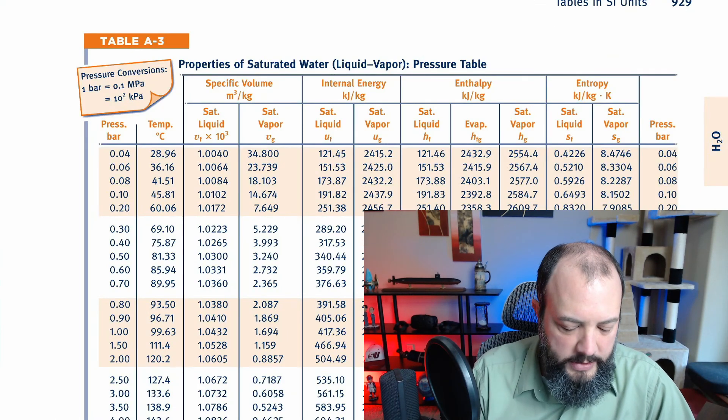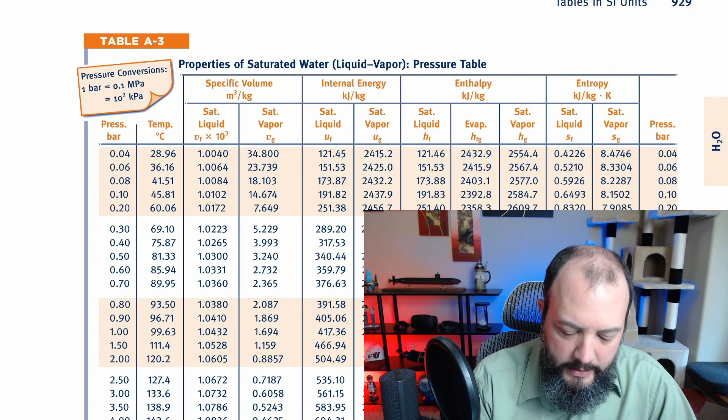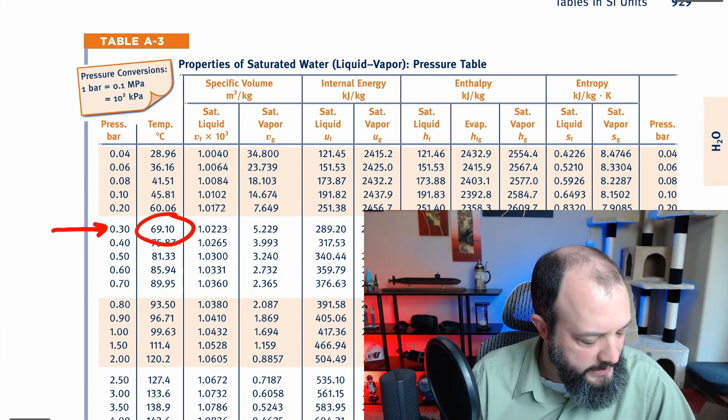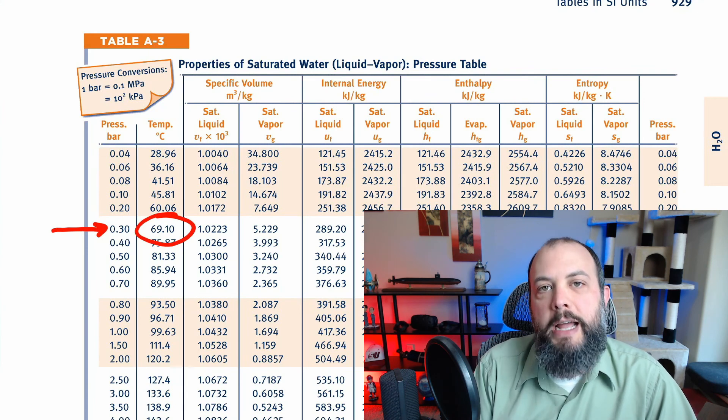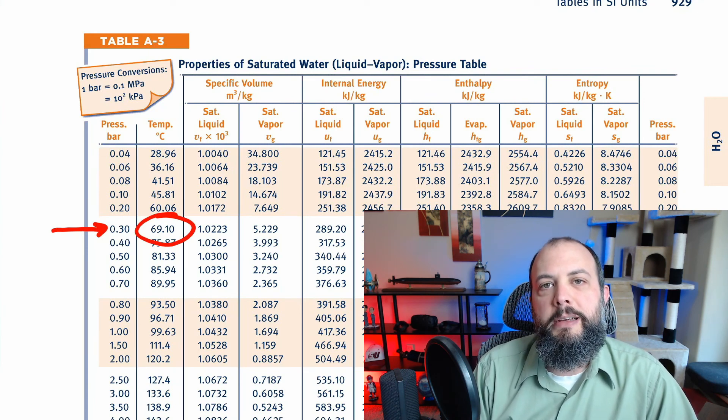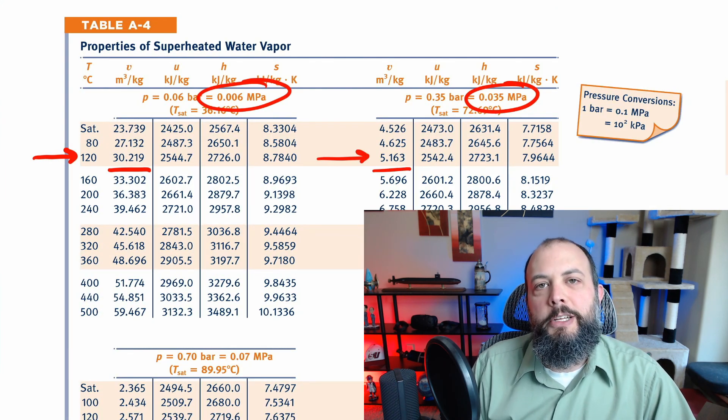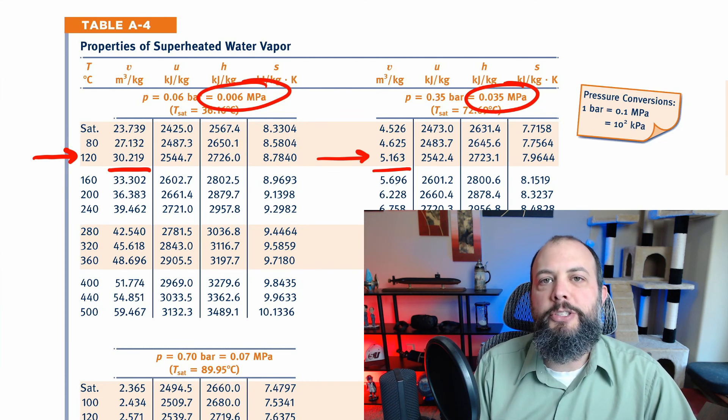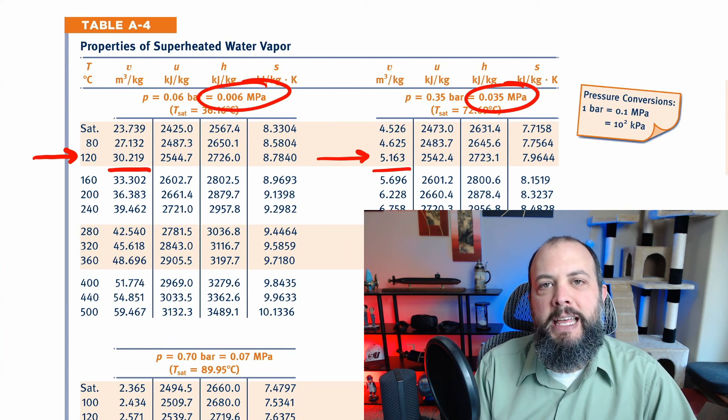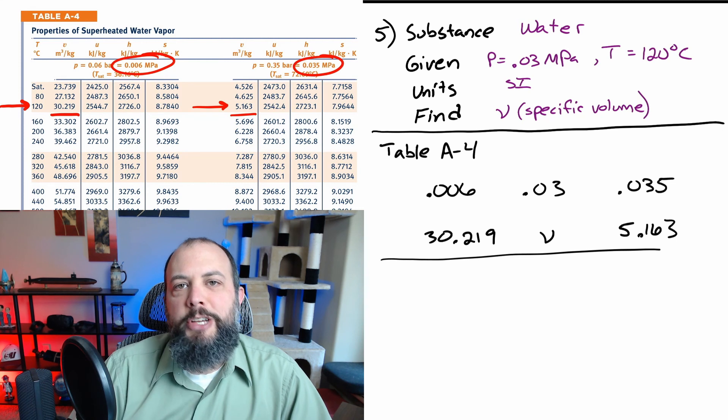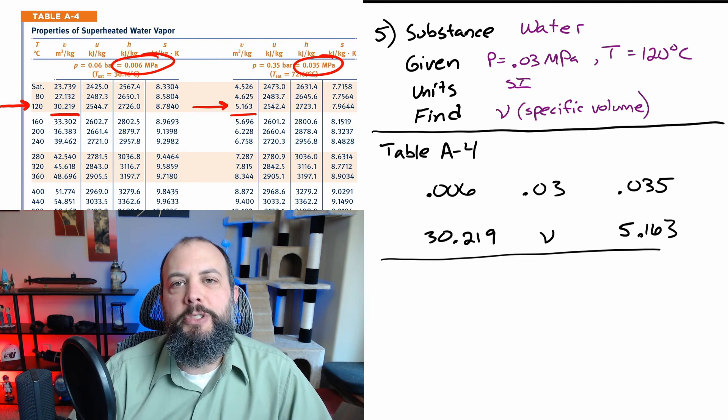So looking at table A-4, the superheated vapor table, you see that our pressure actually falls in between two of these smaller mini tables. So this is going to be an interpolation step. We're actually going to grab one number from each table and interpolate in between them. The specific volume that we're looking for is going to be the same ratio in between the specific volumes in the two tables as the pressure of our substance is in between the pressures of the two tables. So I set up my fraction with both denominators being the total distances between the values in the two tables and the numerator being the value I'm given or trying to find as compared to the value from the table on the left.